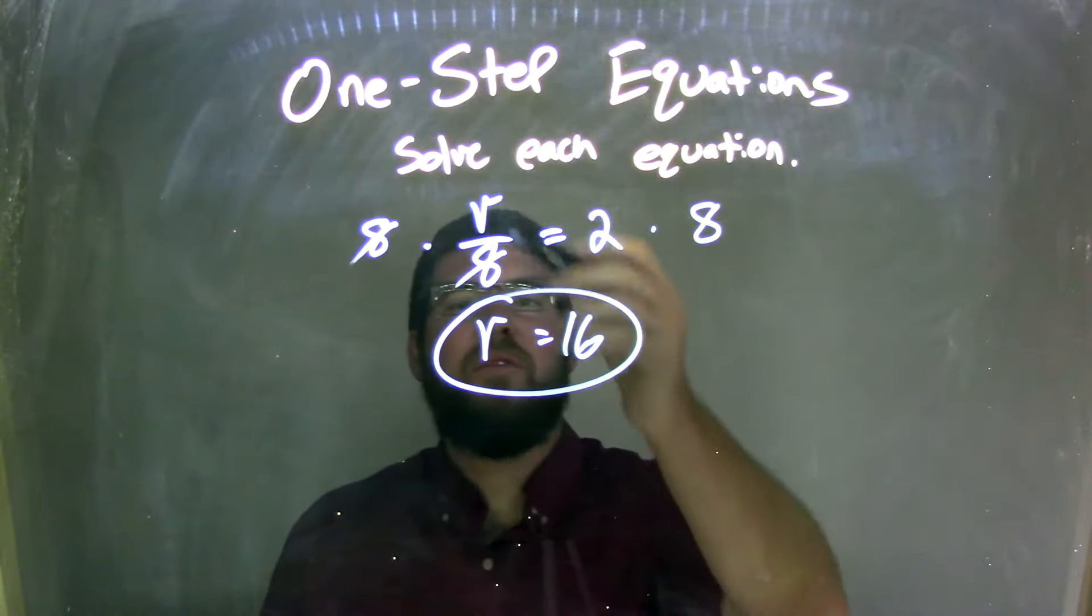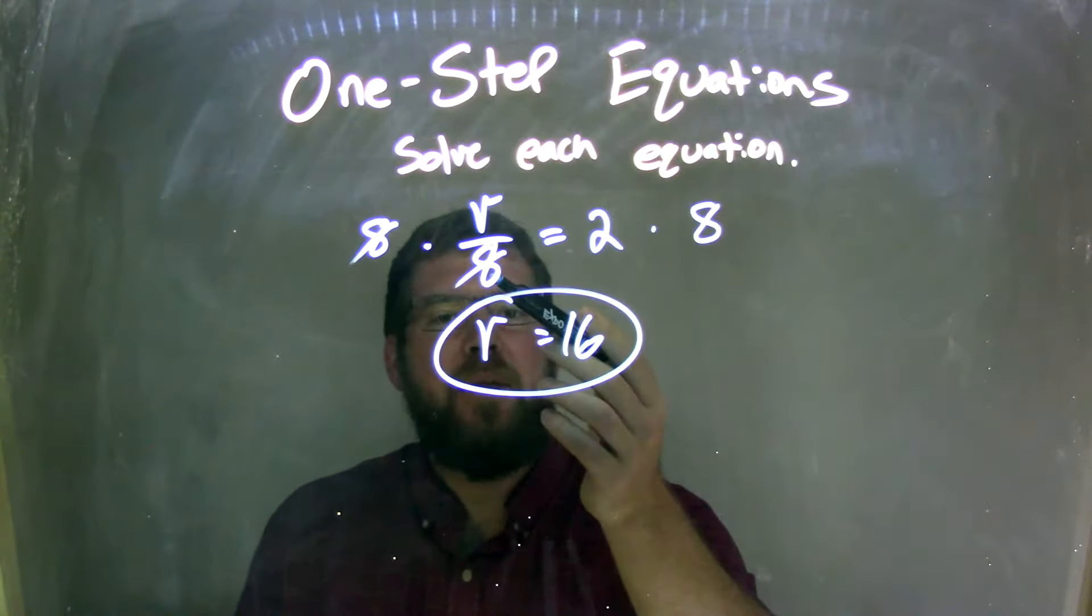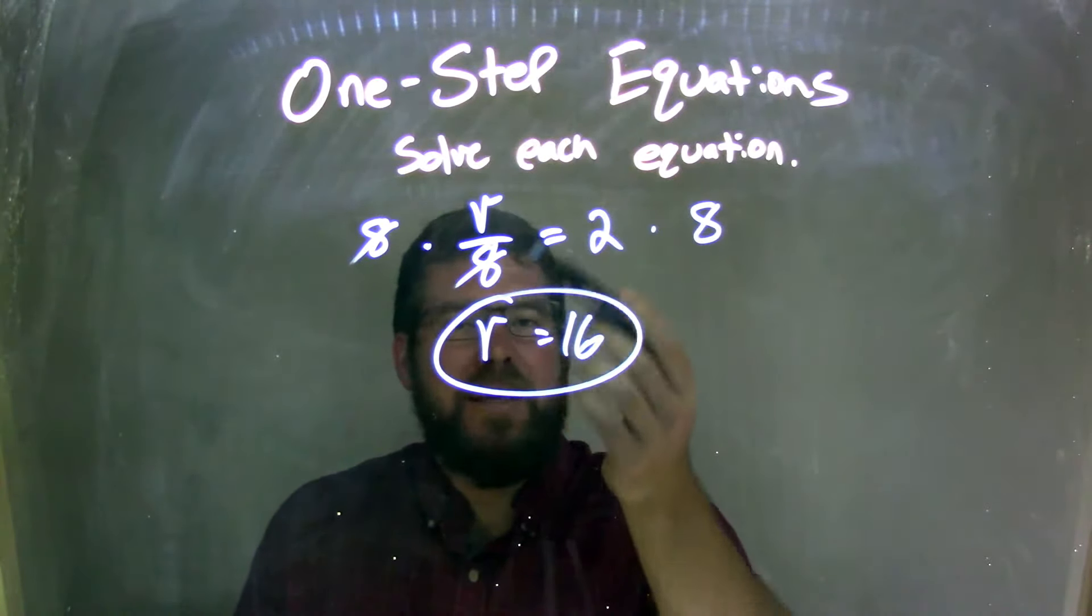So let's recap. We started with v over 8 equals 2. I noticed that there was division, right? v divided by 8. The fraction v over 8 is v divided by 8.